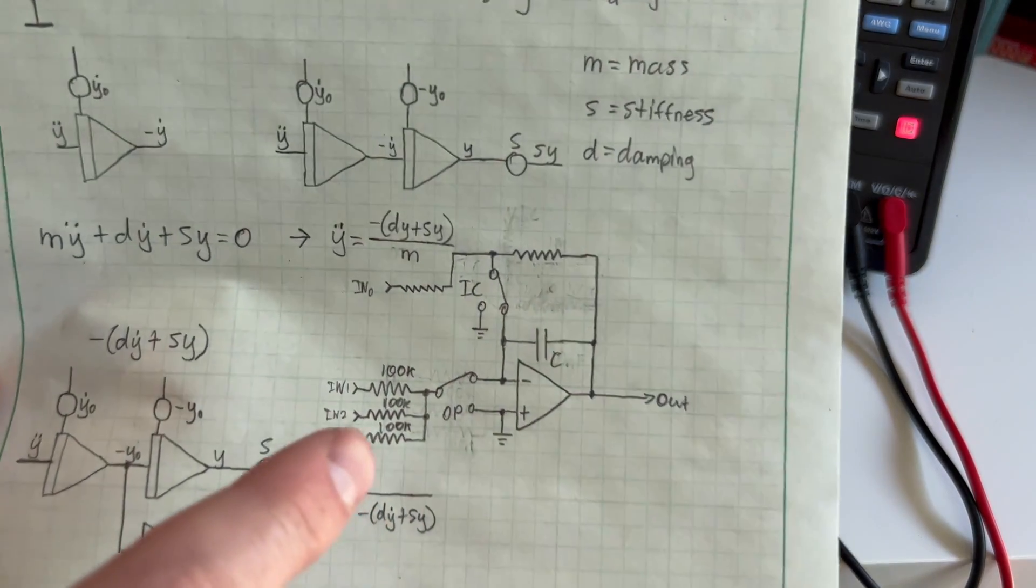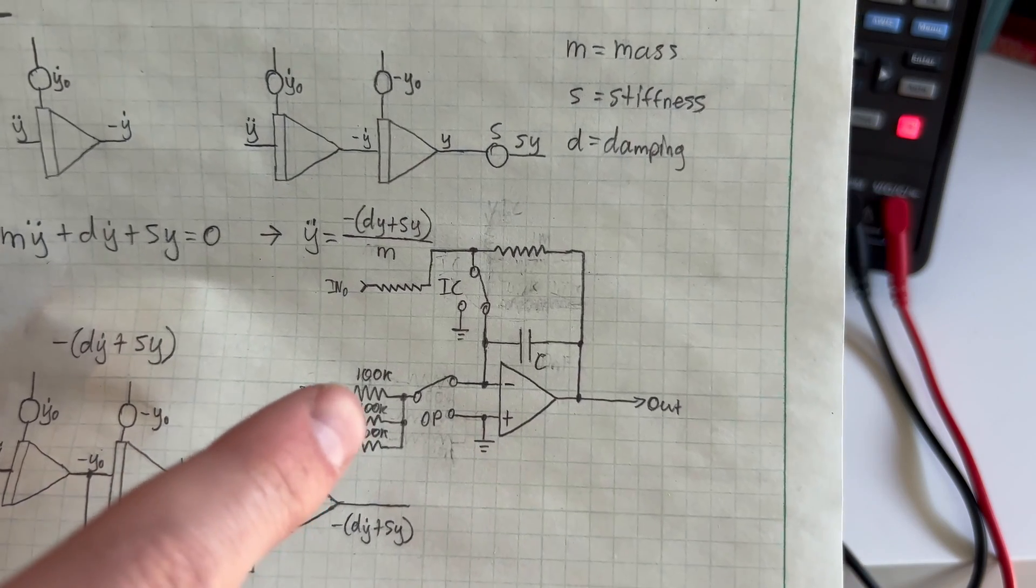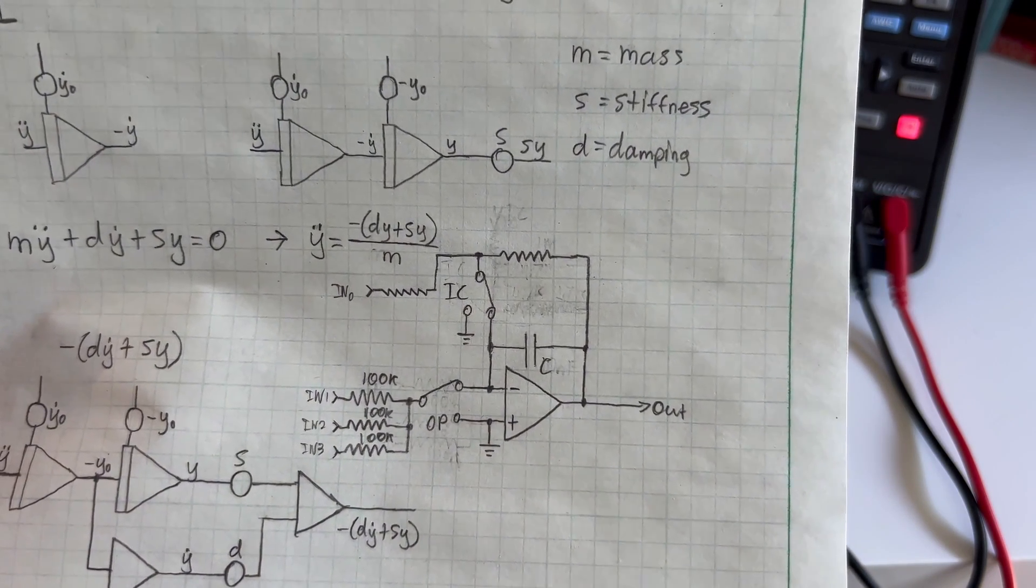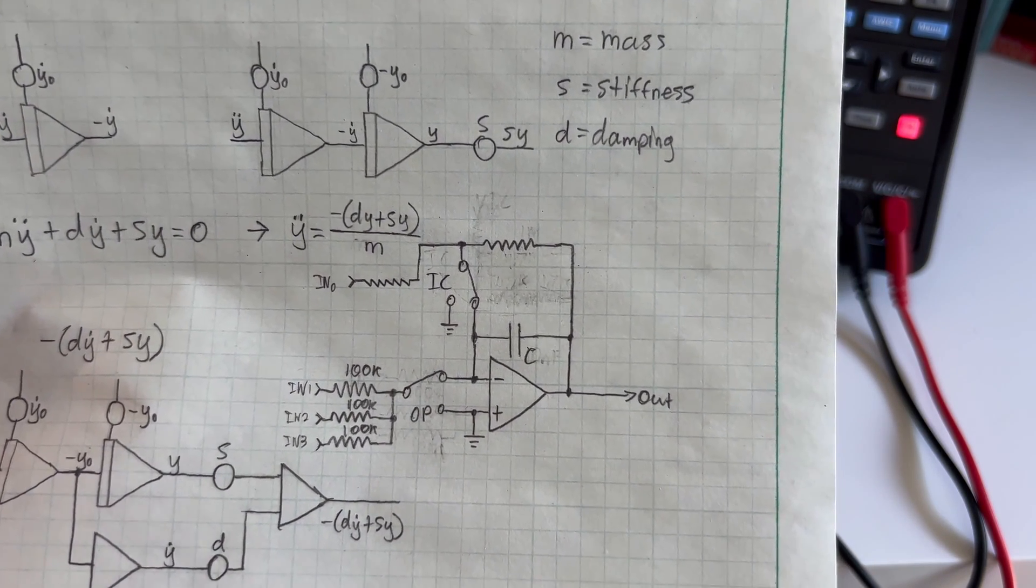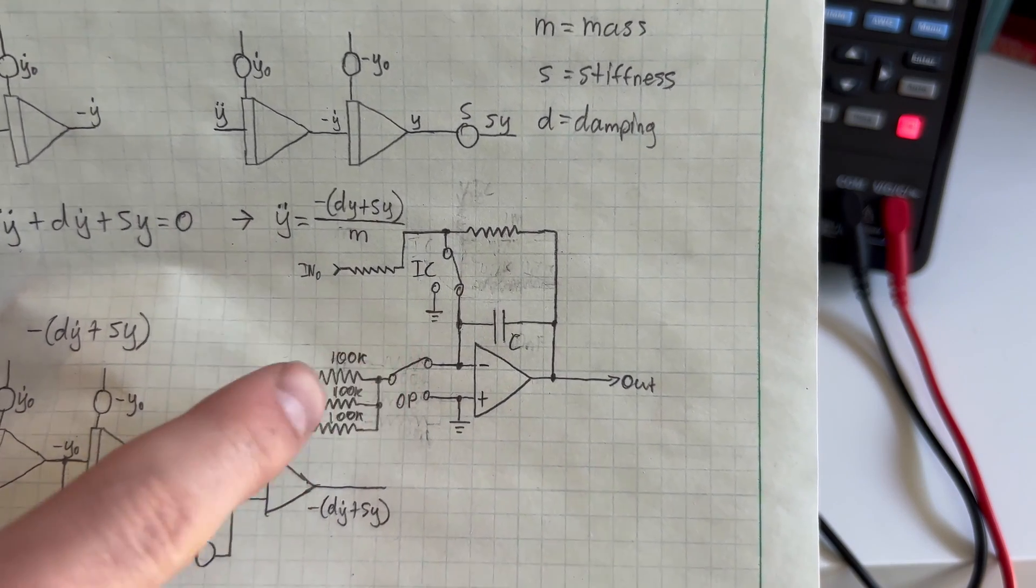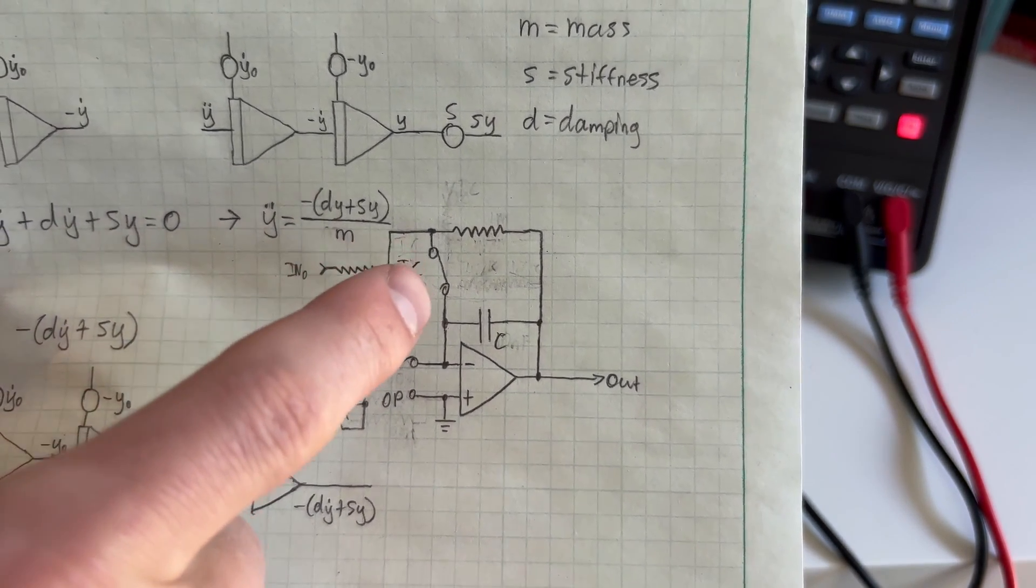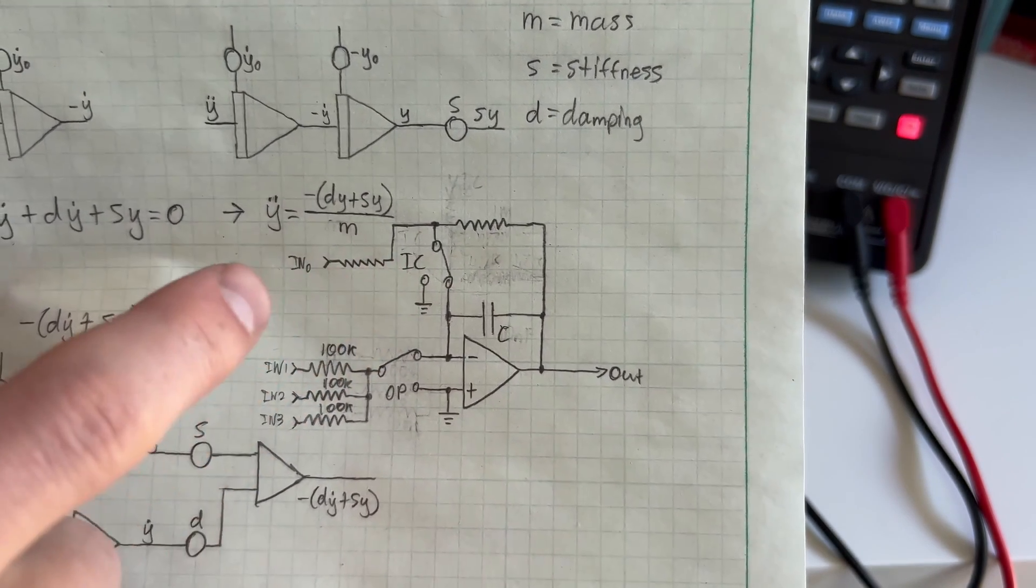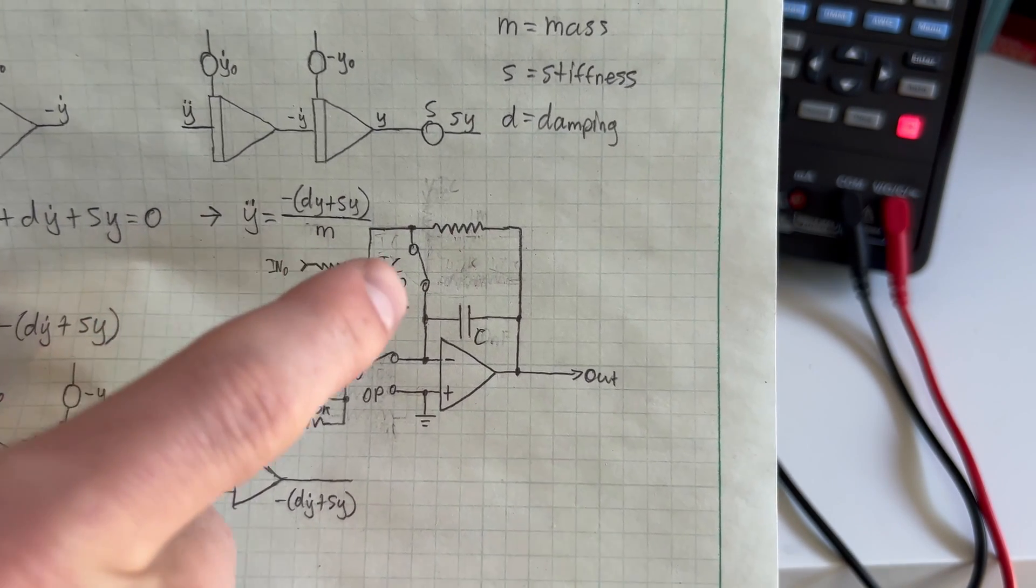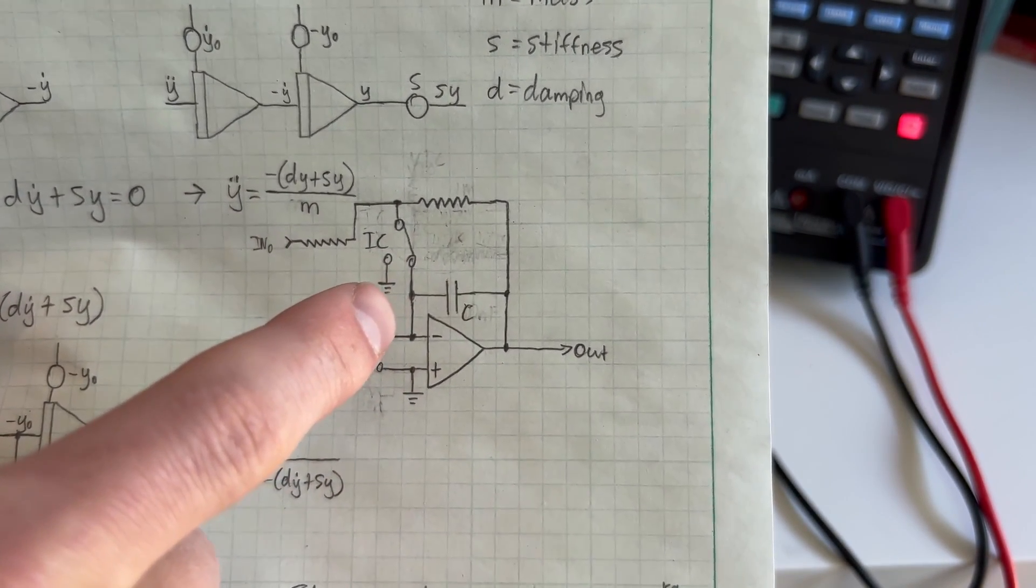This schematic here just shows an integrator circuit. It's not exactly the type I'm using here, but it's the same idea where you have an input. The input's not switched in this case, but you do have what's called an initial condition switch. So you can set an initial condition, preload that, and precharge the capacitor.